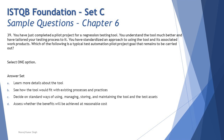Now let's look at the options. Option A says 'learn more details about the tool' — that's something done during the pilot project, which you've already completed, so that's not remaining. Option B says 'see how the tool would fit the existing process and practices' — that's also done during the pilot project. The question states you understand the tool much better and have tailored your testing process to it, so option B is already covered and not valid.